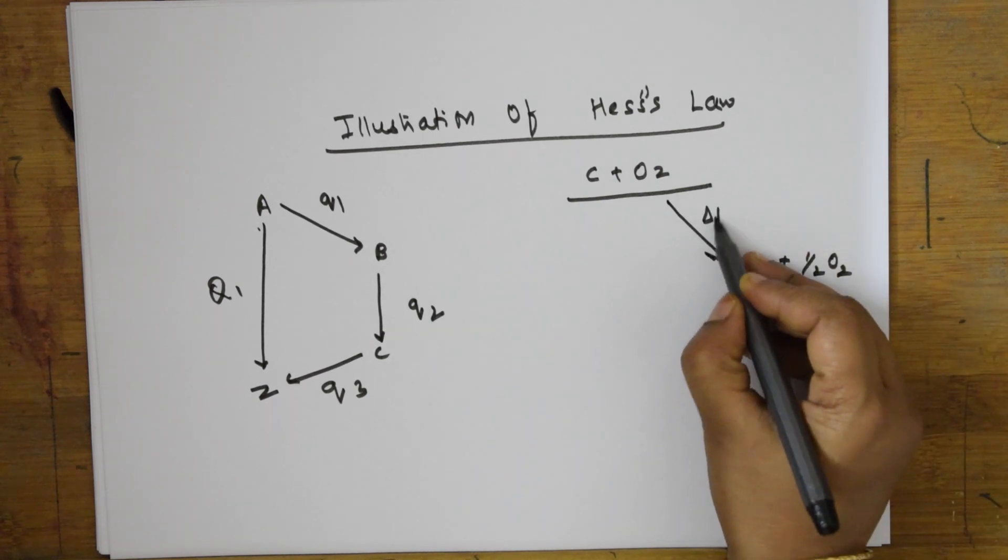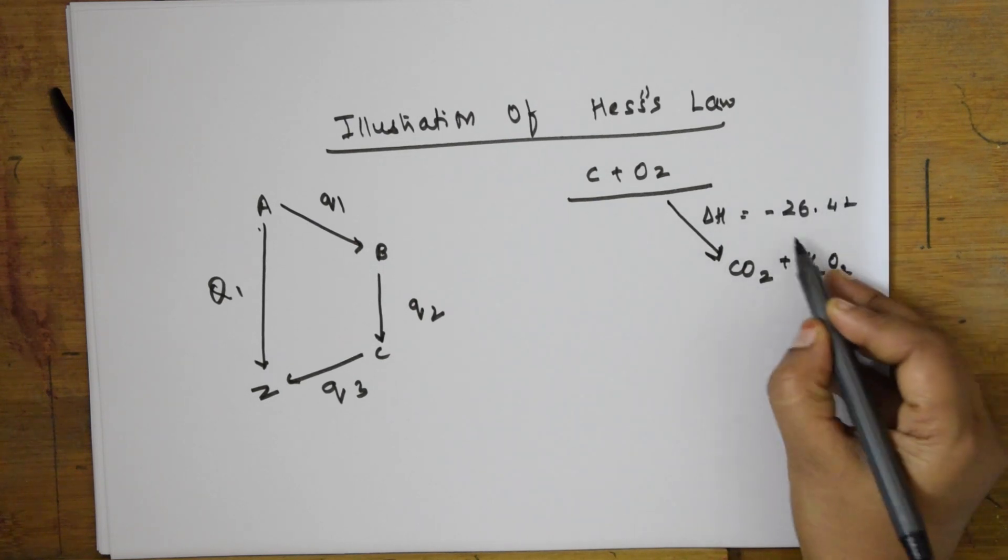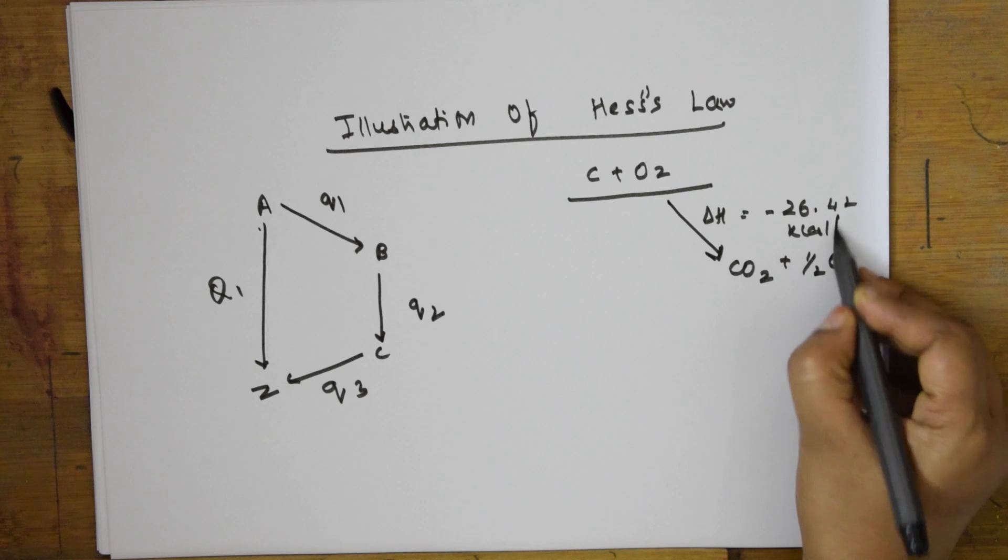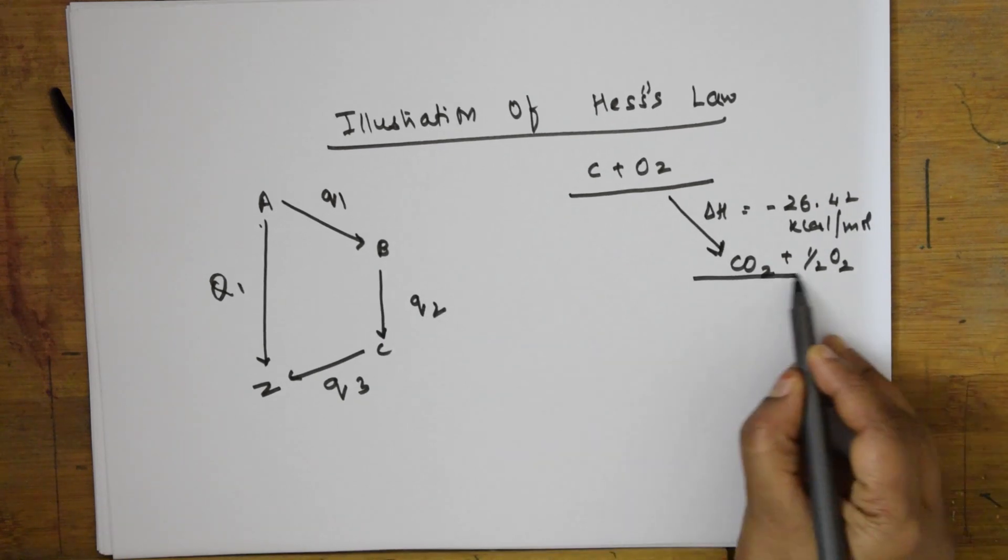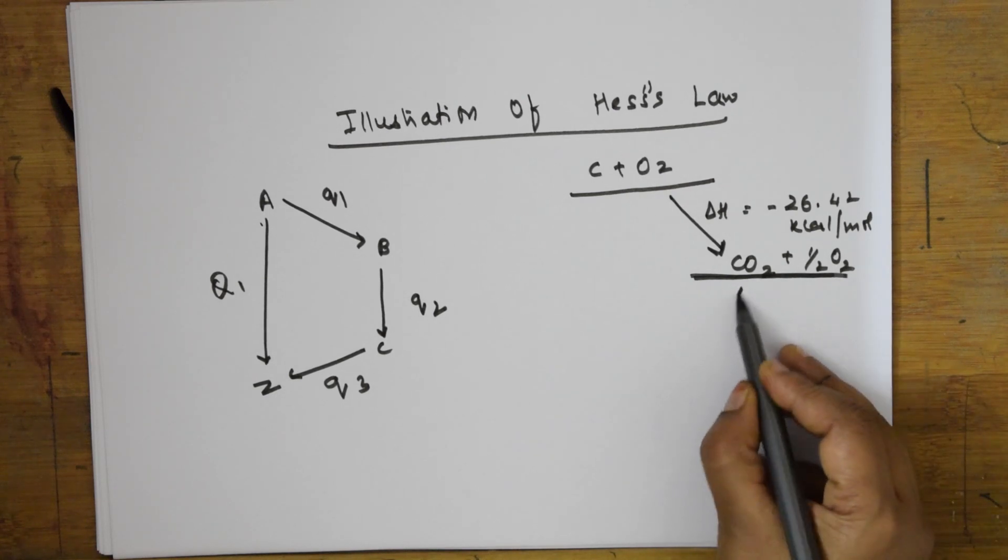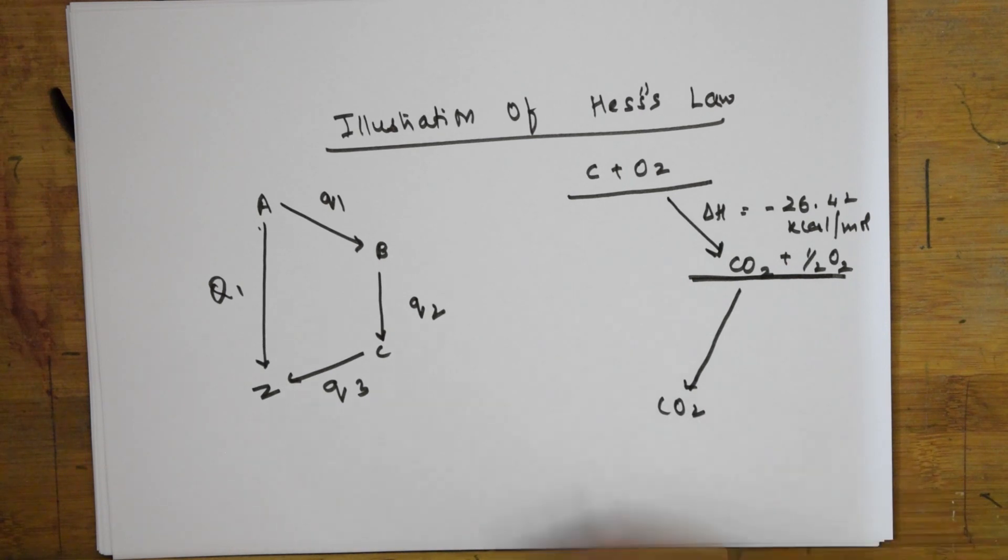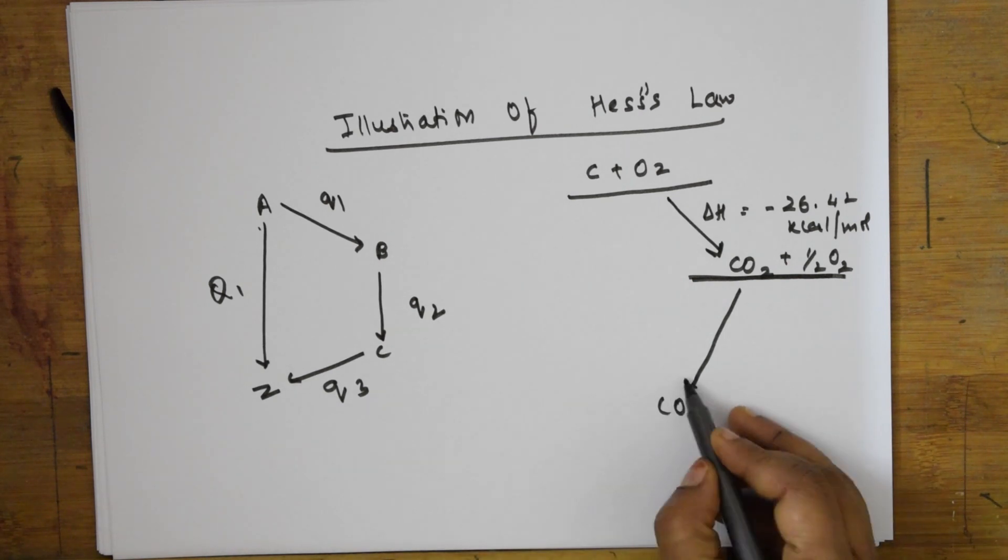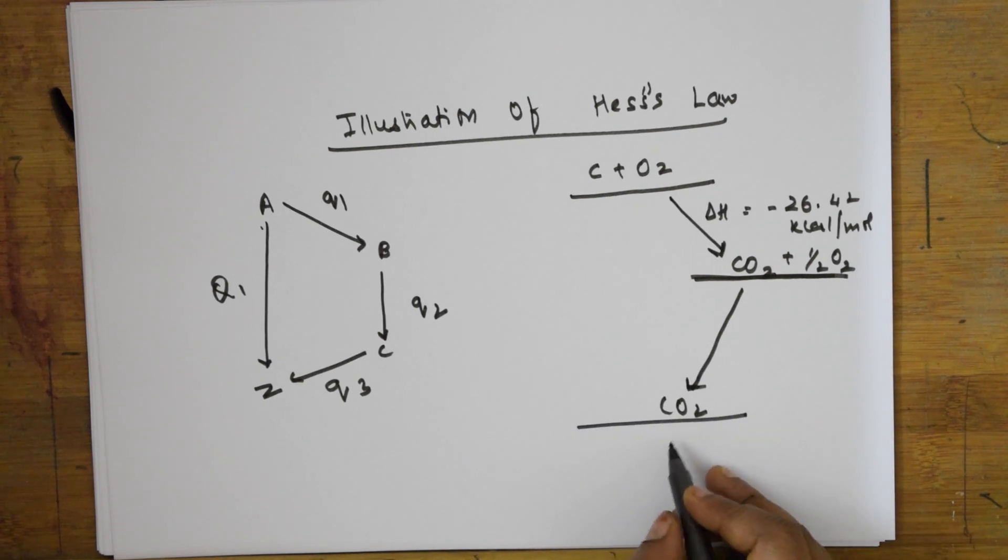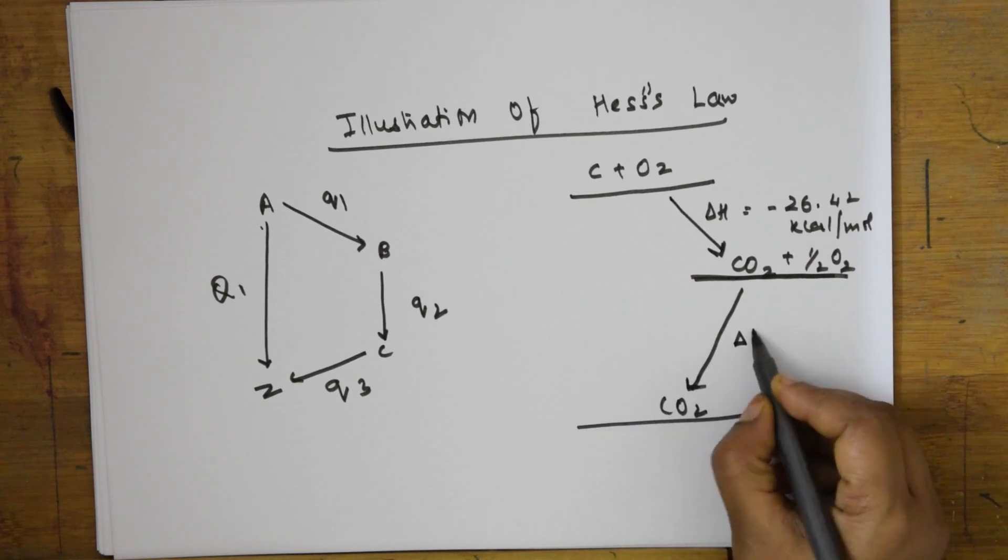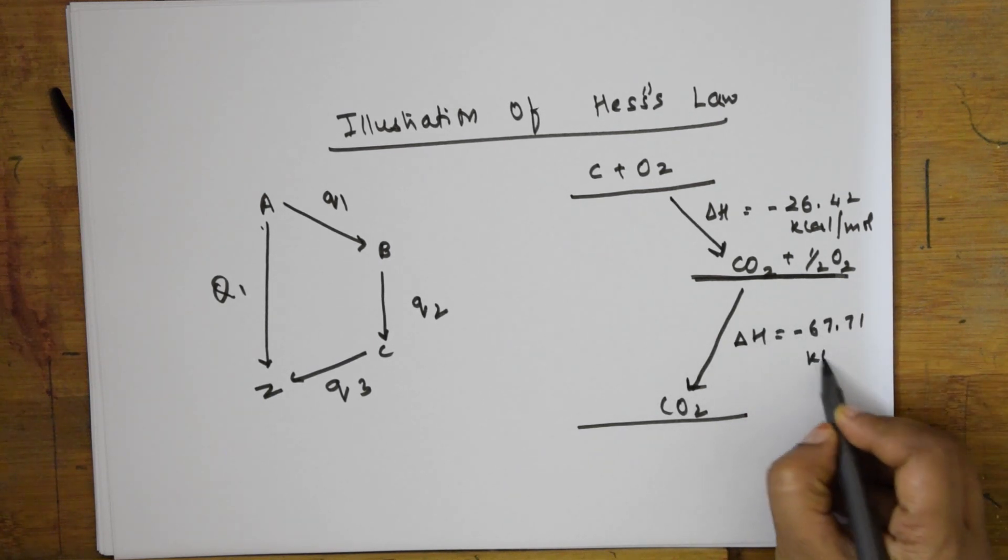Now this step is over. From here, this further converts into carbon dioxide. During this process, delta H value is minus 67.71 kilocalories per mole. But normally, the direct step is carbon plus oxygen forming carbon dioxide directly.